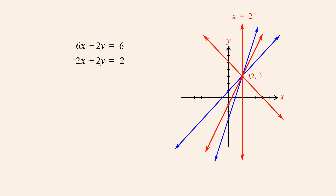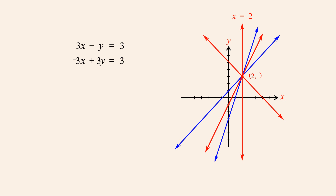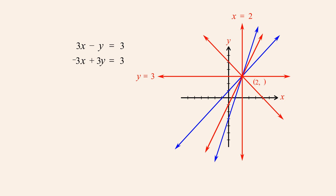Likewise, if we take the original equations and multiply the bottom equation by negative 3, when we add the equations we get 0 plus 2y equals 6, or 2y equals 6, which we can write more simply as y equals 3. Once again, this equation's graph passes through the intersection point of the original two lines, but now the resulting line is horizontal. This equation tells us that the y-coordinate of the intersection point is 3.